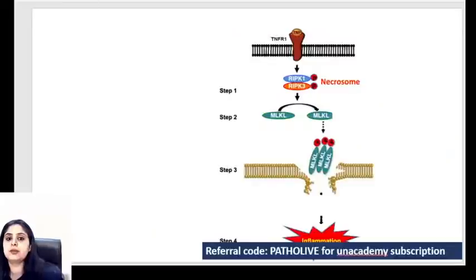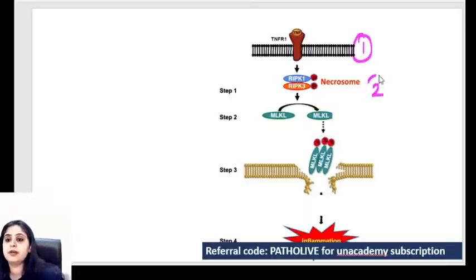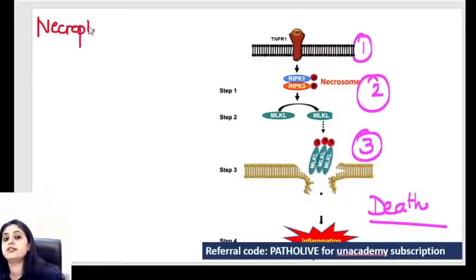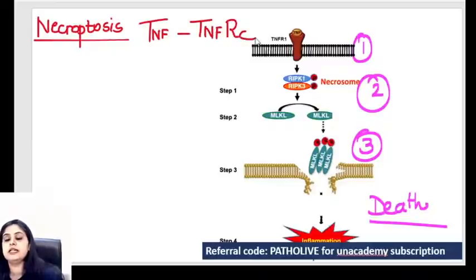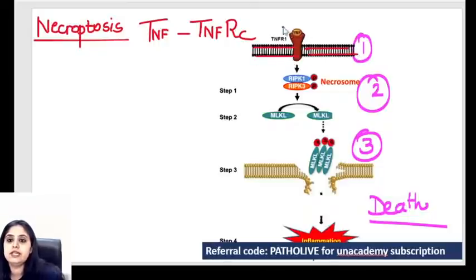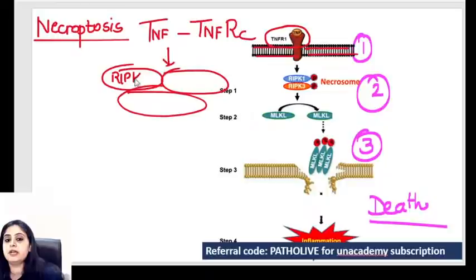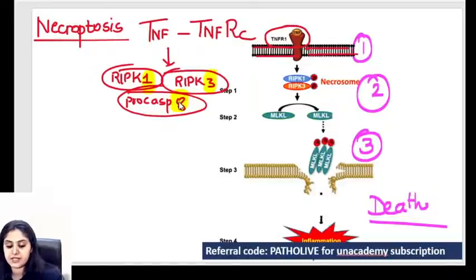Let's quickly revise the mechanism of necroptosis. Very simple - three steps. Step one: TNF combines with TNF receptor. That's how the signal starts. Can you see this cell that has to die? TNF and TNF receptor combine. Step two: inside the cell, a trio forms - RIP kinase 1, RIP kinase 3, and pro-caspase 8.